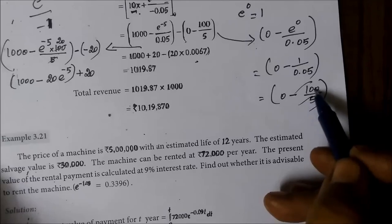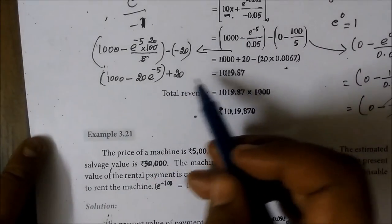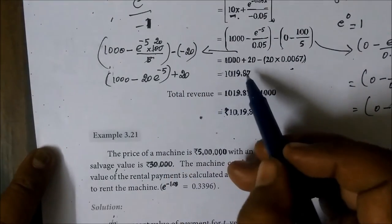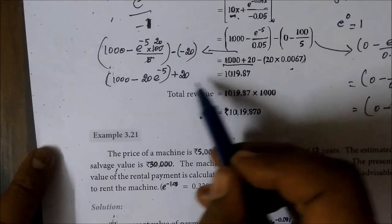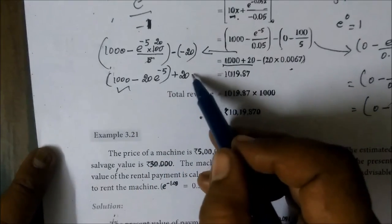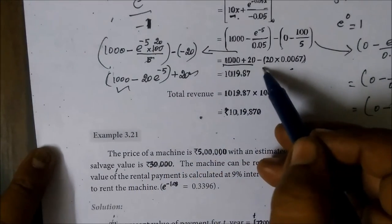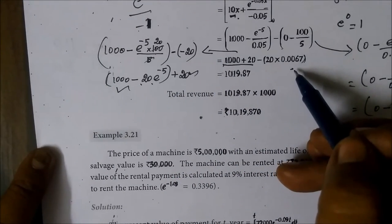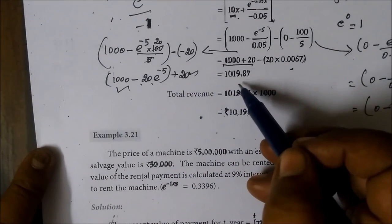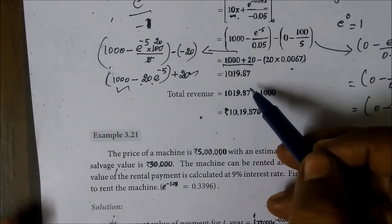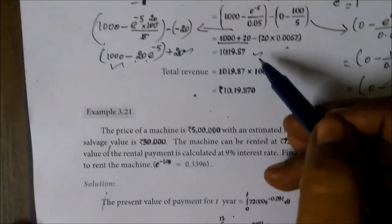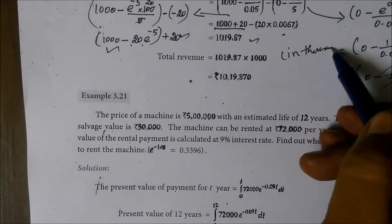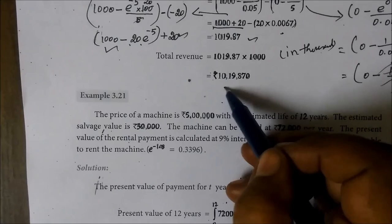If the point is minus plus, the point is plus 20. If you add anything, 1000 plus 20. Then minus 20 into e power minus 5 value. So you are getting 1019.87. The question is in 1000, so multiplying by 1000. So the answer for this is this one.